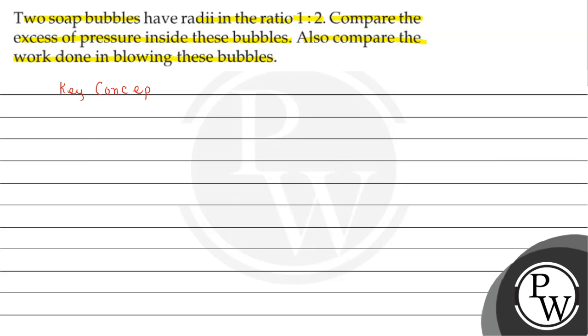Here we are using surface tension of soap bubble due to excess pressure. We can write the formula P equals to 4 sigma divided by R, where sigma is the surface tension and R is the radius.